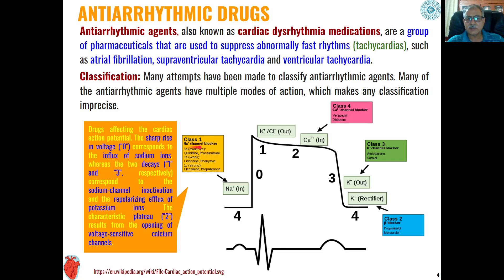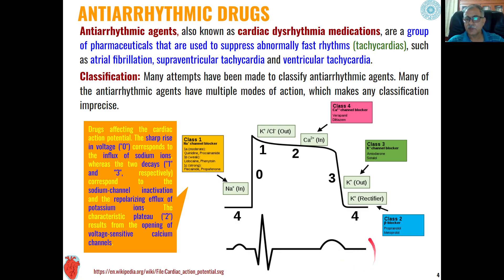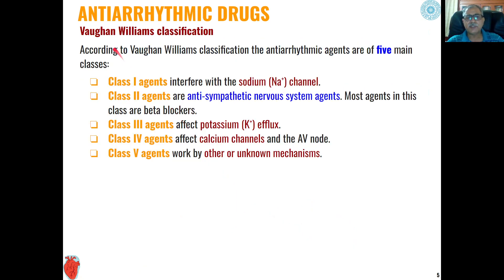Class 1 anti-arrhythmic agents block the sodium ion channel. Class 2 are mainly beta blockers and primarily block potassium ion channels. Class 3 are also potassium channel blockers, and Class 4 agents block the calcium channel. This classification is based on the mode of action on different channel types relative to the cardiac action potential.